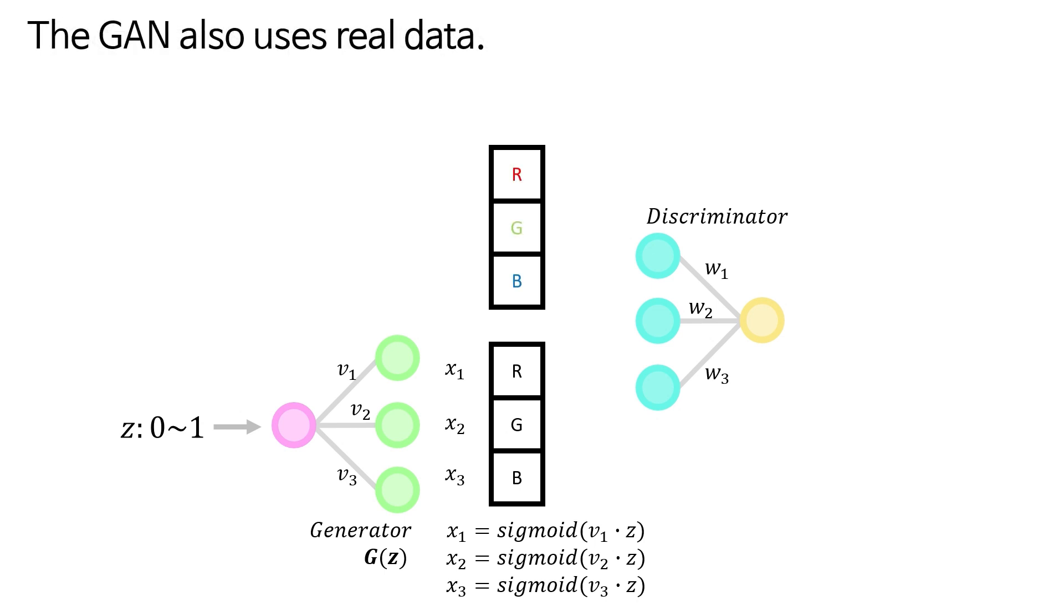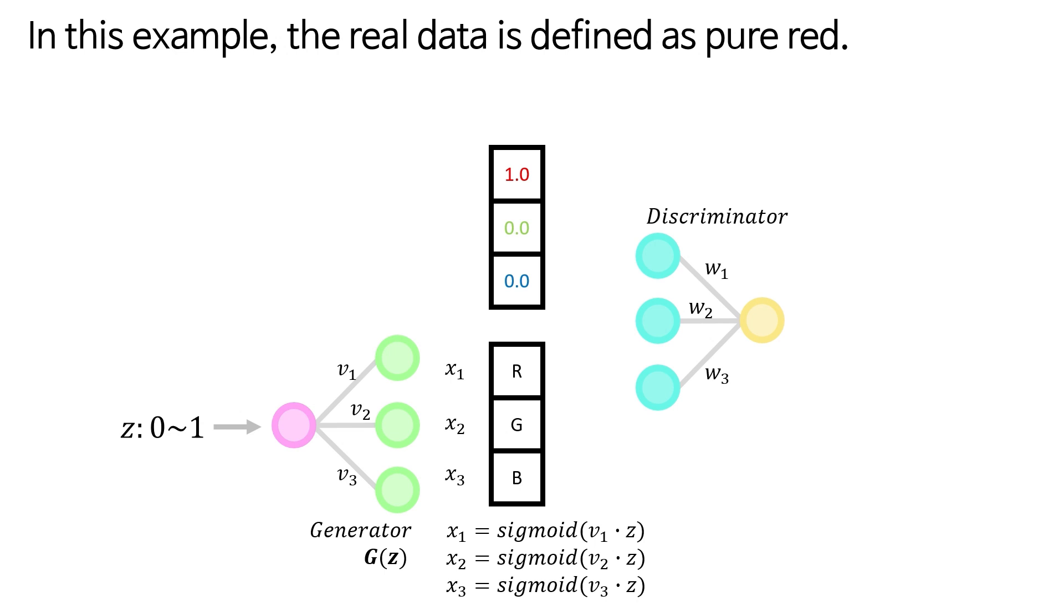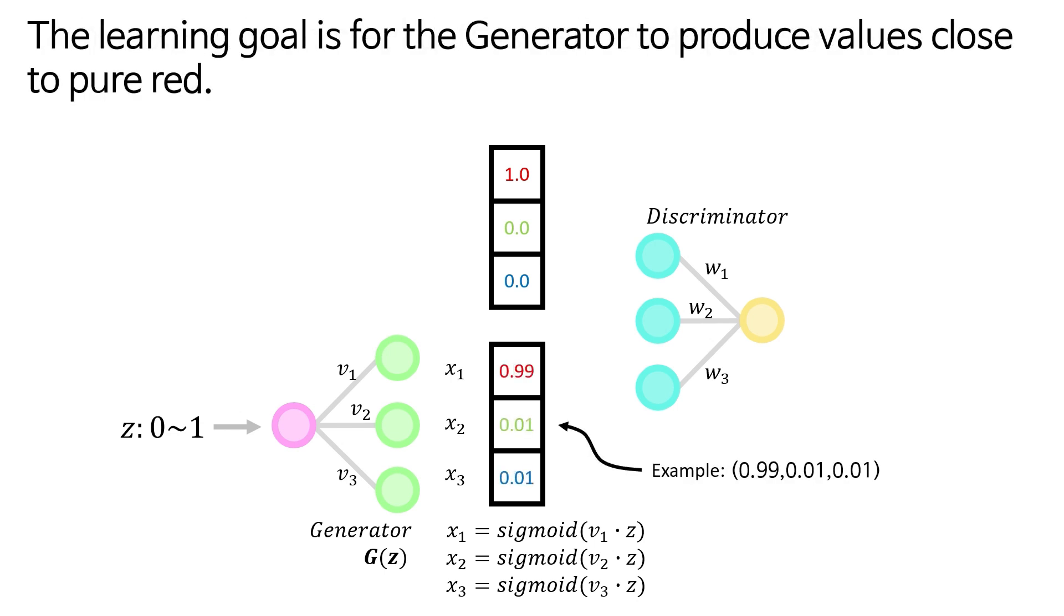The GAN also uses real data. In this example, the real data is defined as pure red. The learning goal is for the generator to produce values close to pure red.